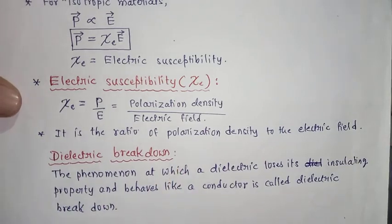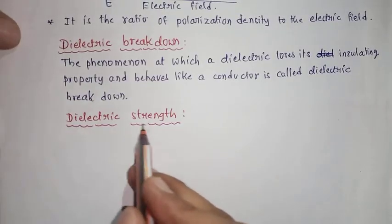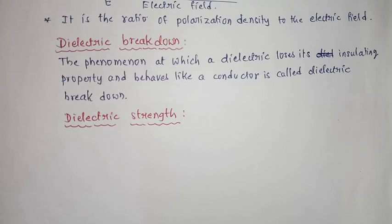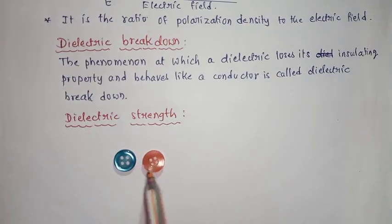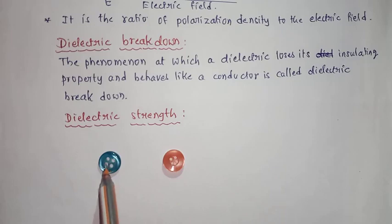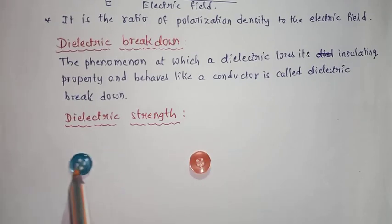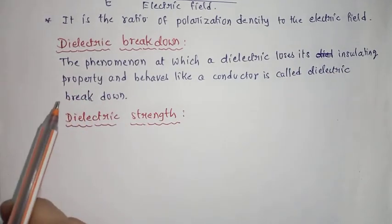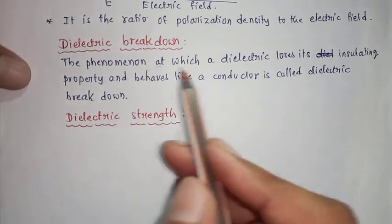The next term is dielectric strength. As I already discussed, if you increase the electric field, the dipole moment separation increases. At a particular maximum electric field applied, dielectric breakdown occurs — the dielectric loses its insulating property. So the maximum electric field that can be applied that a dielectric can withstand without dielectric breakdown is called dielectric strength.